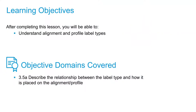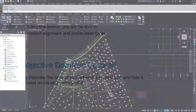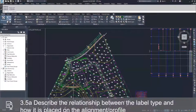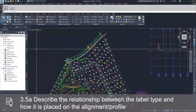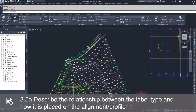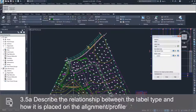In this video, we're going to discuss the different types of labels associated with alignments and profiles. To talk about the labels we'll be using, first we need to navigate to the annotation tab and then click on the Add Labels button.